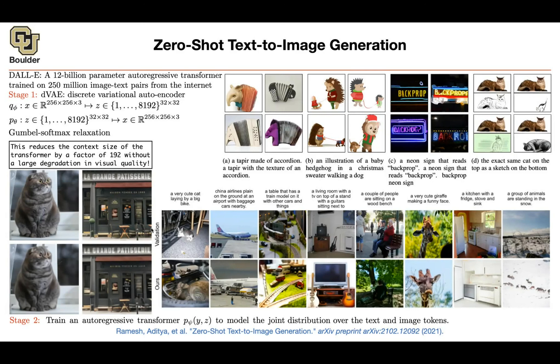This is the actual ground truth. This is one of the images in your training data. And this is what the network is generating. This one looks very good. China Airlines plane on the ground at an airport with baggage cars nearby. So that's an image that is generated by this method. A very cute giraffe making a funny face.